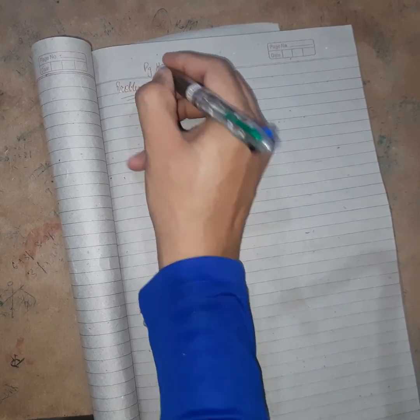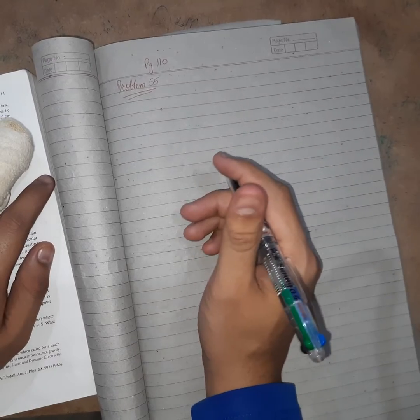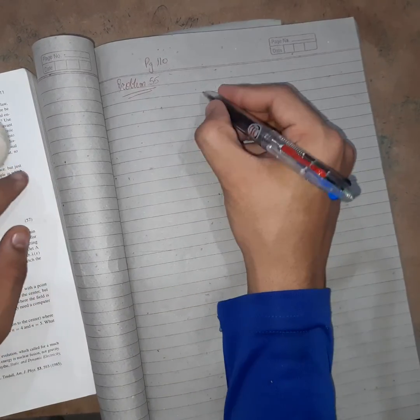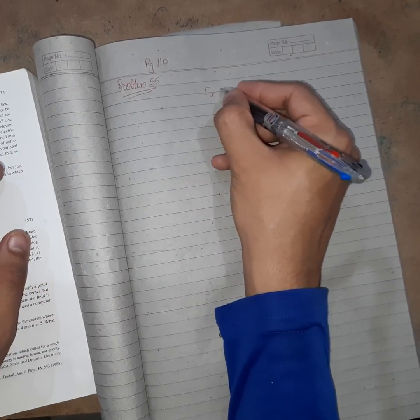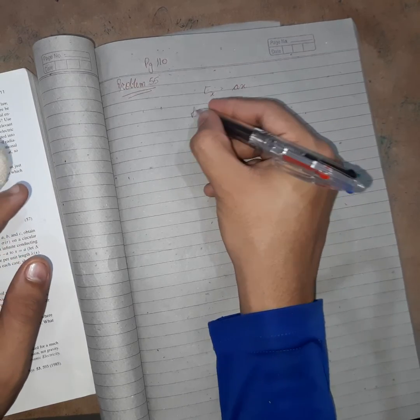This is Problem 55 on page 110. The problem says that E is given, E in the direction of x given as ax, and we need to calculate rho.